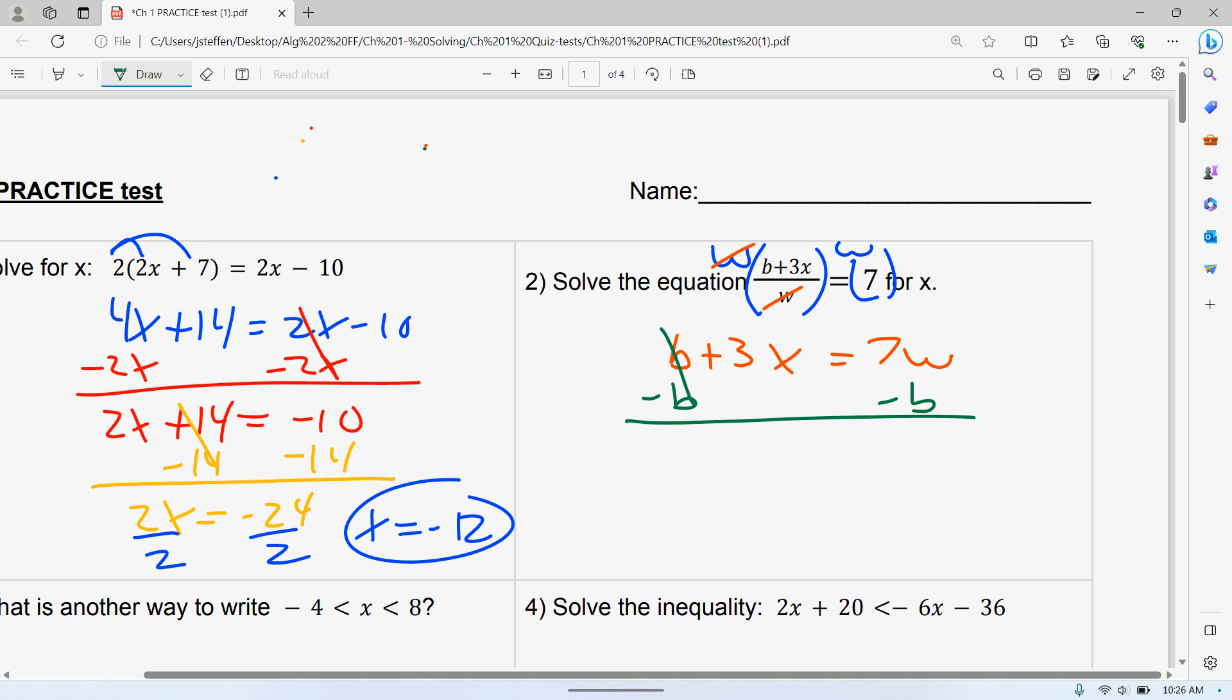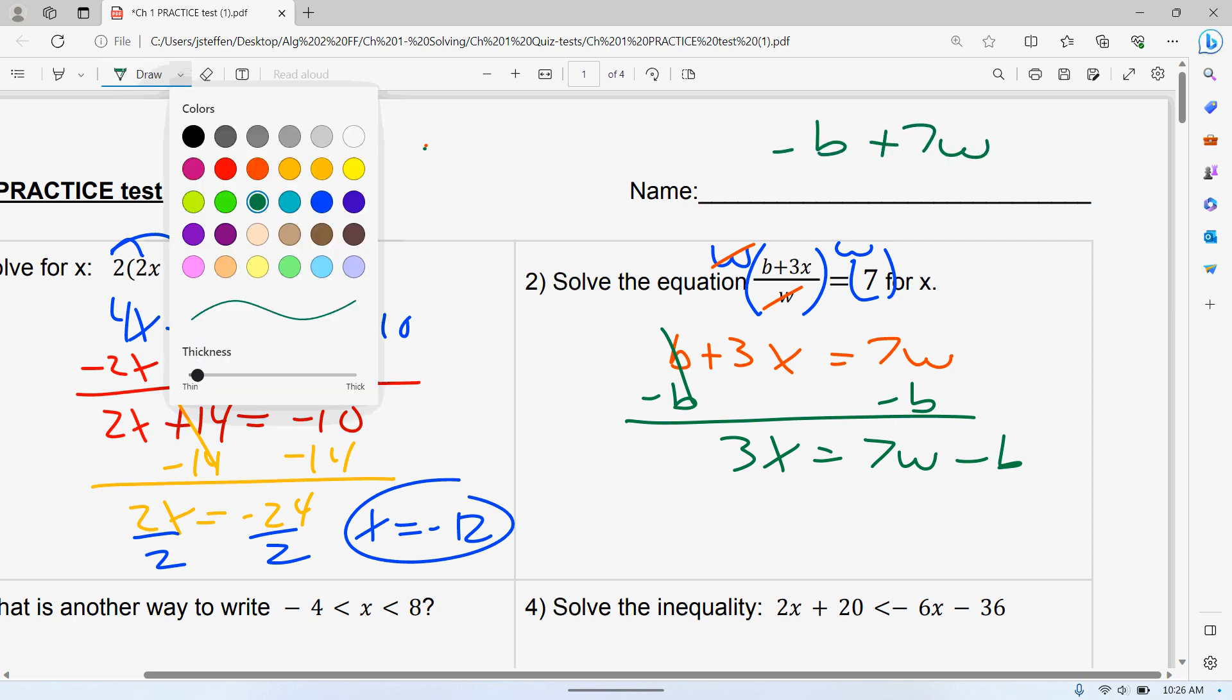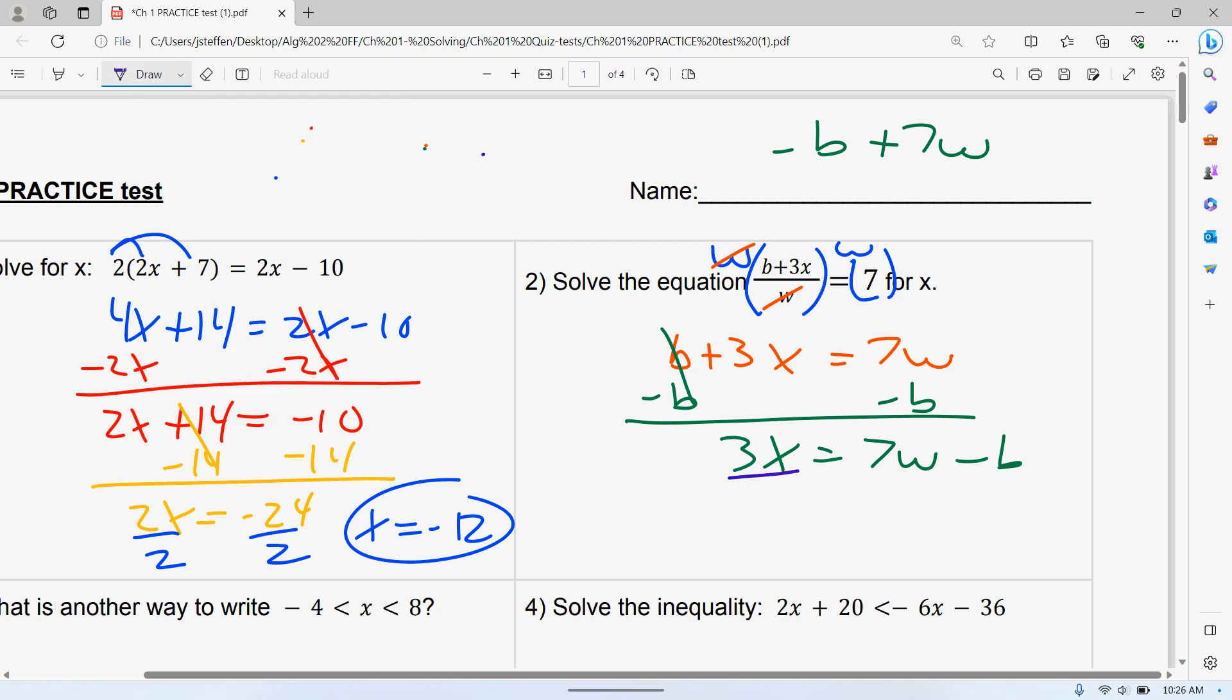Now remember there's a couple different ways to write this. I'm going to do seven W minus B. You could have done minus B plus seven W, it doesn't make any difference. Last but not least, I'm going to divide everything by three. My answer is seven W over three minus B over three. Remember, you could have done it as seven W minus B all over three. If it's multiple choice, it might be that second way, but make sure you're aware of both ways.